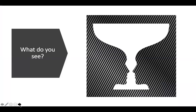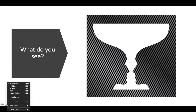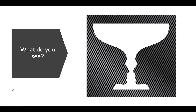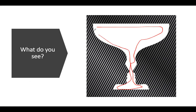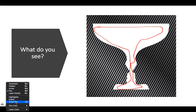My first question is: what do you see in this picture? Some of you might see the cup. If you focus on the white piece, you might say that you see a cup. And some of you might think that you see a silhouette of a face.